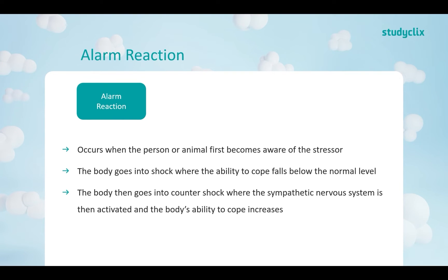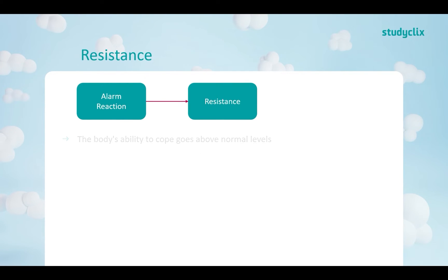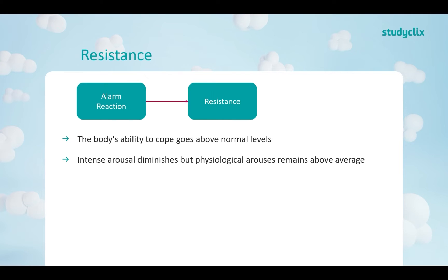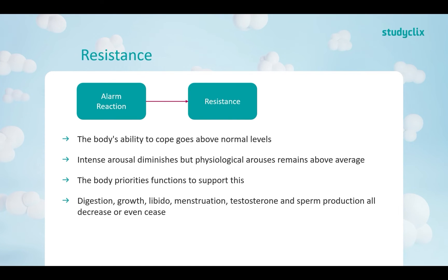Moving on to the next stage: resistance. The body's ability to cope goes above the normal level — we're coping better than we normally would. Intense arousal diminishes because adrenaline subsides and cortisol takes over, but physiological arousal remains above normal due to cortisol. The body prioritizes functions to support this, so digestion, growth, libido, menstruation, testosterone, and sperm production all decrease or even cease during this stage.